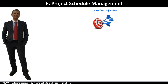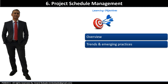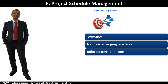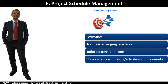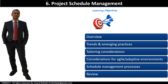The learning objectives of this session are: we will start with an overview to understand the purpose of this knowledge area. Trends and emerging practices, where we will talk about iterative scheduling with backlog and what is Kanban. Tailoring considerations — what is a lifecycle approach that should be tailored. Considerations for agile and adaptive environments, where we will try to understand traditional, agile and hybrid approaches. And finally, a schedule management processes overview, going through all six schedule management processes.